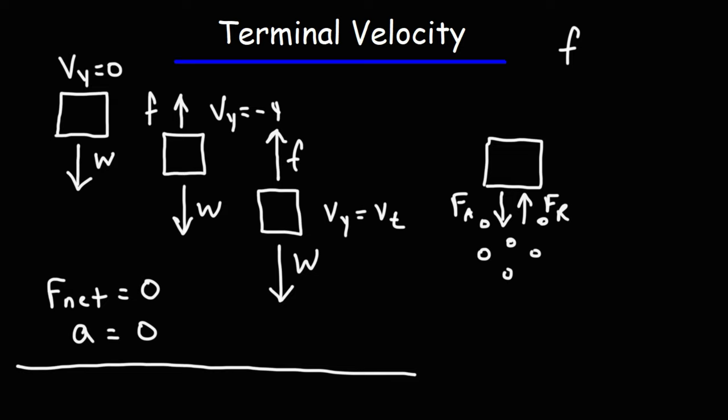In this case, Vy is now equal to Vt — that's the terminal speed. When we use the term velocity, keep in mind velocity can be negative, but speed is always positive. So the vertical speed becomes the terminal speed when the weight force is equal to the air resistance.